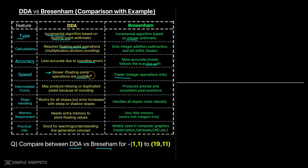Although if you are watching this in 2025, processing power has significantly improved. These algorithms were developed in the 1960s when processing power was a luxury, so speed is not going to be a big issue today, but accuracy is definitely a concern. Sometimes DDA produces missing or duplicate points because of rounding errors, whereas Bresenham generally produces precise and consistent pixel points.